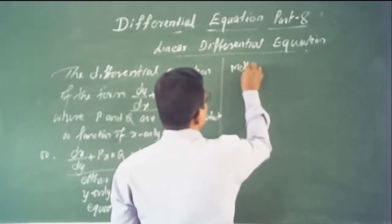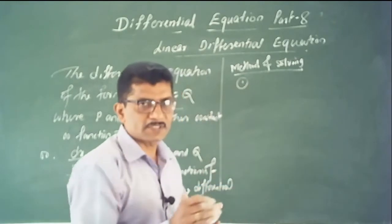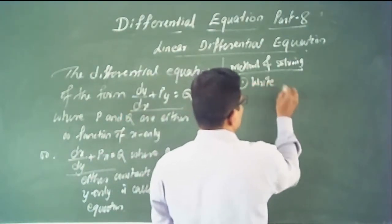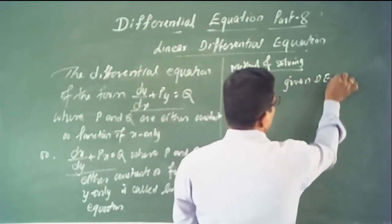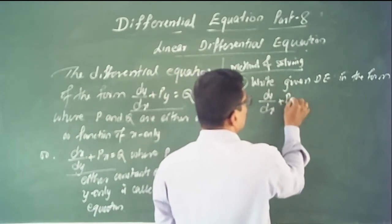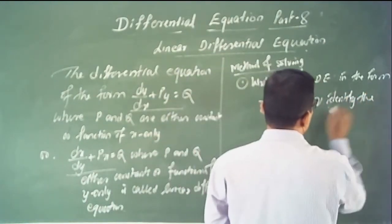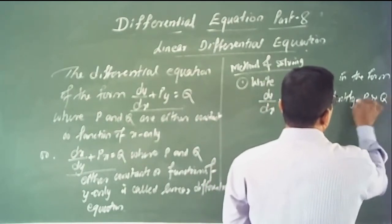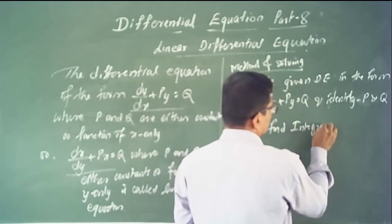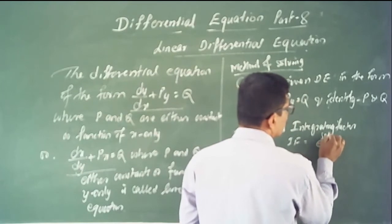The method of solving is very simple. First, write the given differential equation in the form dy/dx + P·y = Q. Then identify P and Q. Then find the integrating factor, which is e to the power integral of P dx.